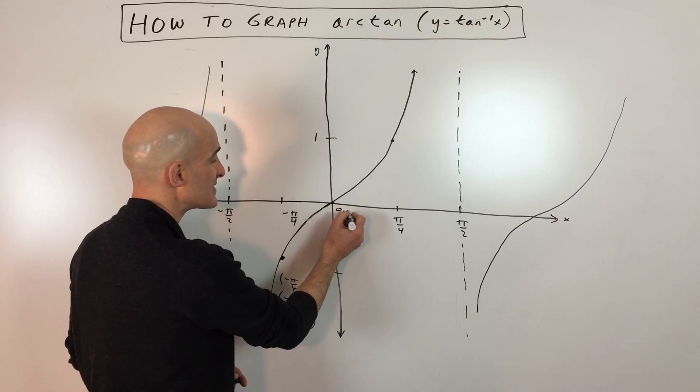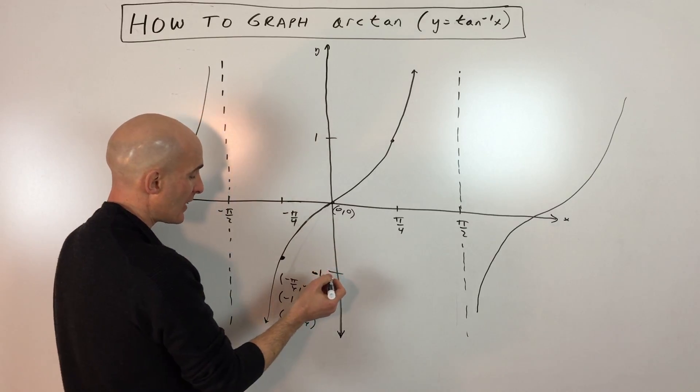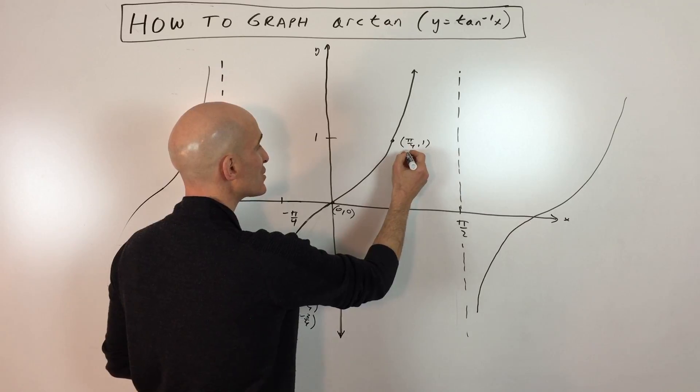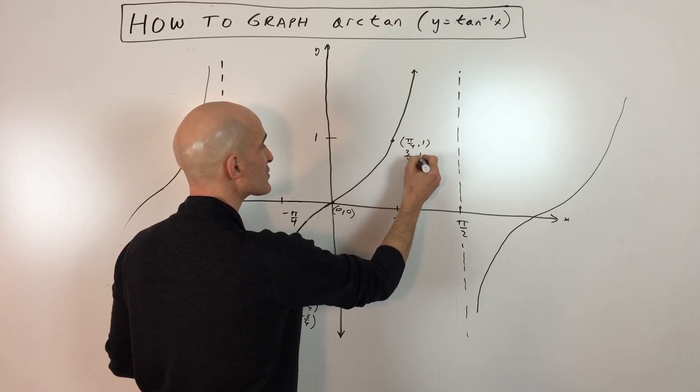This point here at the origin, that's easy. That's 0, 0. And then this point over here, pi over 4 comma 1, which is about 3 fourths comma 1.